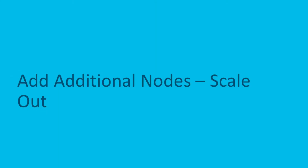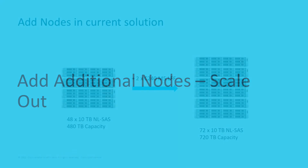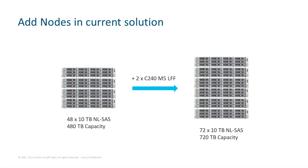In the next task, we add additional nodes — this is a scale-out of the MinIO cluster. We started originally with four nodes, each with eight disks, and after the scale-up each node now has 12 disks. Now we add two additional nodes to create a six-node cluster. One thing to mention: normally an expansion of a MinIO cluster should include at least four nodes, but in our environment we only had two available, so this is purely a demonstration of how it works.